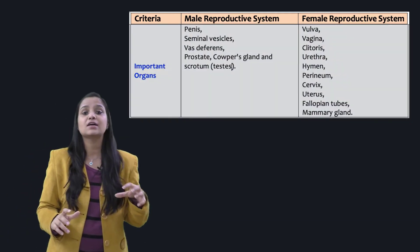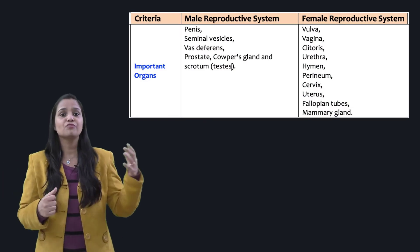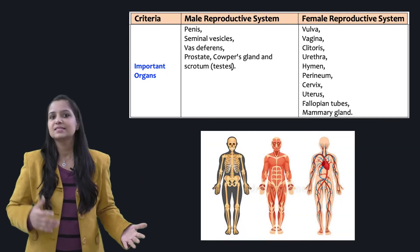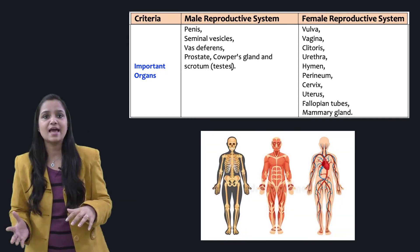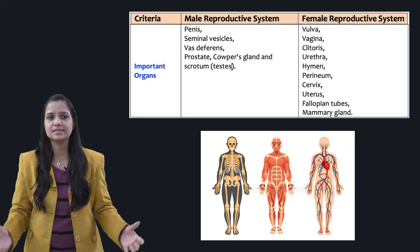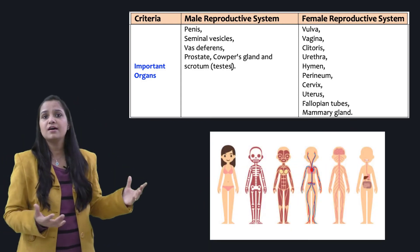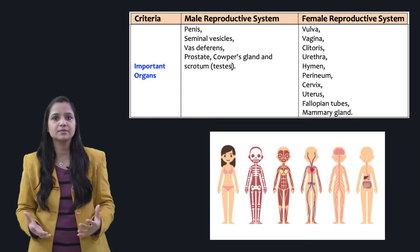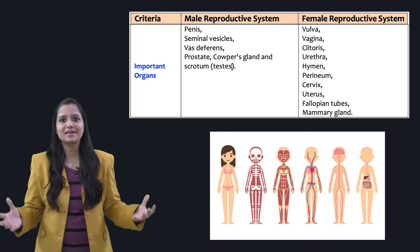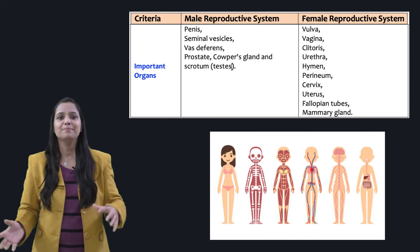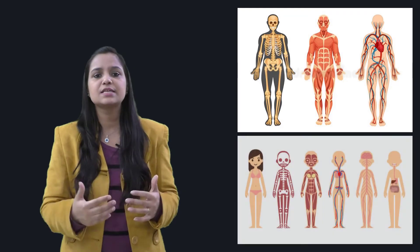Next are the important organs involved in the complete reproductive system. For males, these include the penis, seminal vesicles, vas deferens, prostate gland, Cowper's gland, and scrotum with testes. For females — as shown in the image — these include the vulva, vagina, clitoris, urethra, hymen, perineum, cervix, uterus, fallopian tubes, and mammary glands.